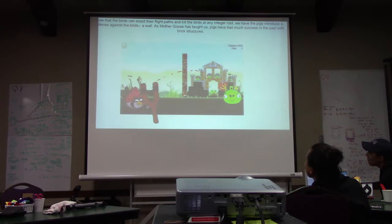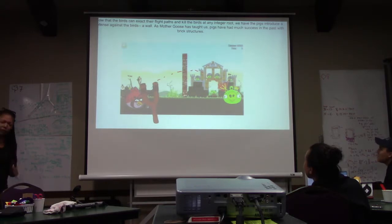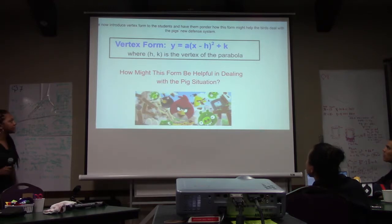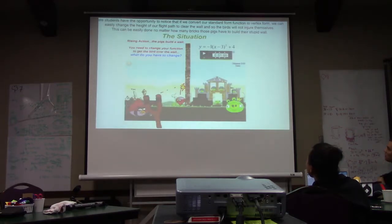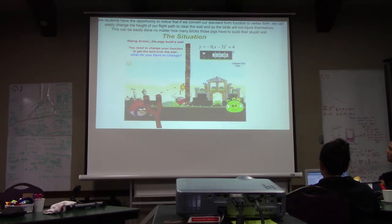Now that the birds can exact their flight paths and kill the pigs at any integer root, the pigs introduce a defense: they build a wall. Because as Mother Goose has taught us, pigs have had much success in the past with brick structures. So we introduce vertex form to the students and have them ponder how this form might help the birds deal with the pigs' new defense system. Students notice that if we convert standard form into vertex form, we can easily change the height of the flight path to clear the wall — no matter how many bricks those pigs have to build their wall.